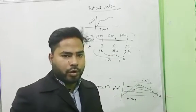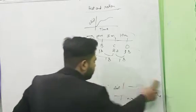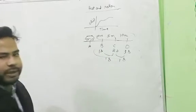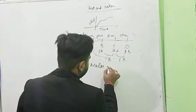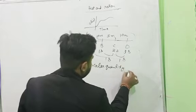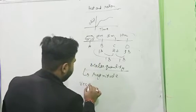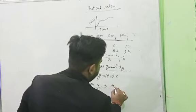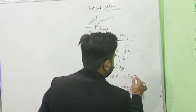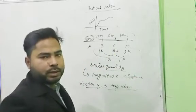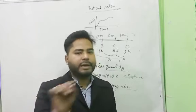This is called non-uniform motion. There are two types of quantities: scalar quantities and vector quantities. Scalar quantities consist of only magnitude. Example of scalar is distance, and mass — 5 kg, where 5 is the number and kg is the unit, completely representing a magnitude.